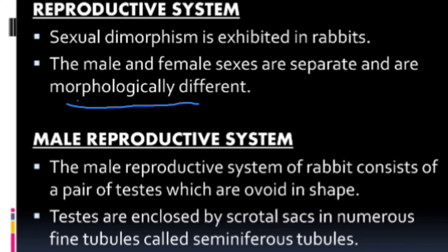Ovary is the main organ in the female reproductive system. We are going to study the male and female reproductive system. We shall continue in the next class. You have to revise the excretory system — I will ask questions in the next class.